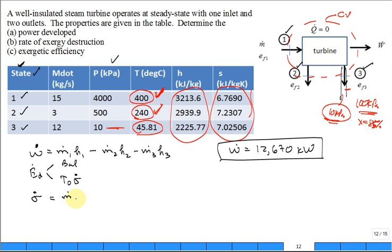Is that equal to M dot one, S one, M dot two, S two plus M dot three, S three minus M dot one, S one. This is the outflow of entropy. It has to be higher than the inflow of entropy. Does that make sense? If you calculate the sigma dot, the generation, you'll get 4.458 kilowatts per kelvin. Is that the right units, sigma dot, kilowatts per kelvin?